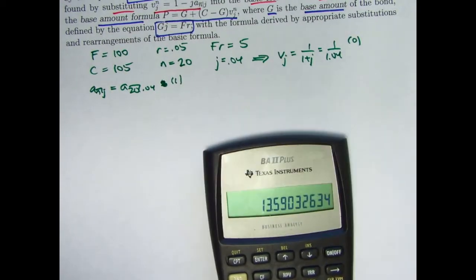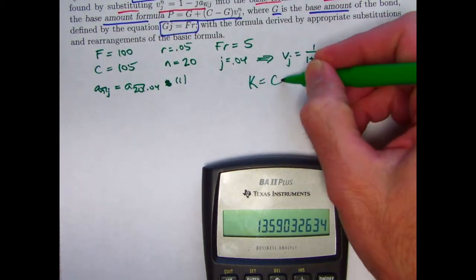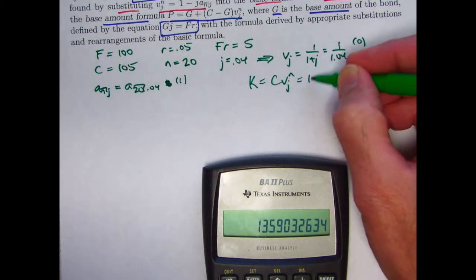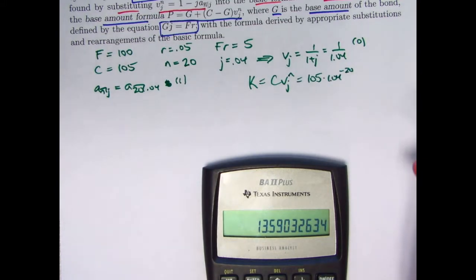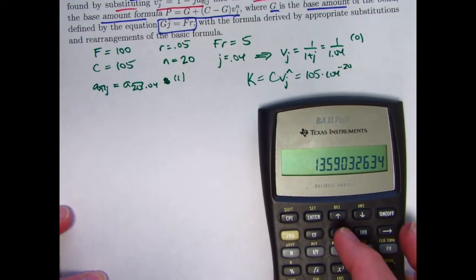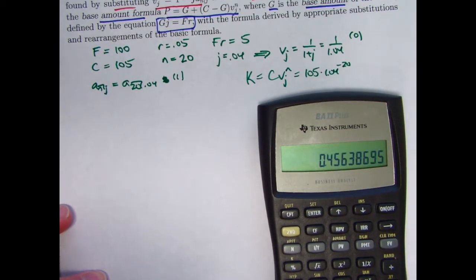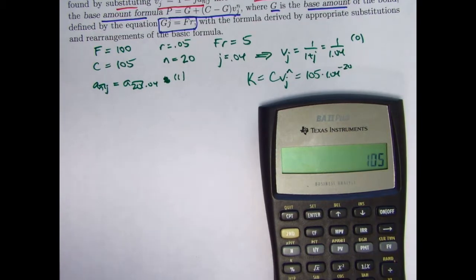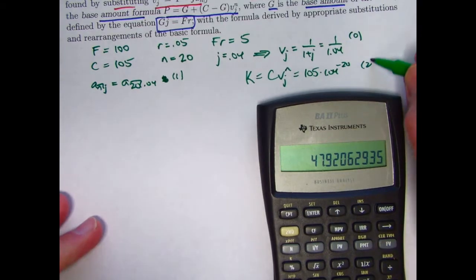What next? How about K? The present value of that future redemption amount. This is going to be the same thing as 105 times 1.04 to the negative 20th power. So let's calculate that. V is in register 0. Raise that to the positive 20th power is the same as 1.04 to the negative 20th power times 105. About 47.92. I will store that in register 2.